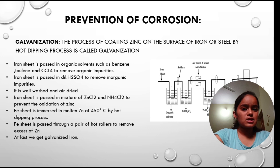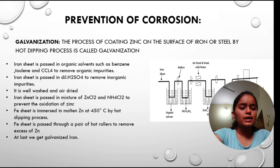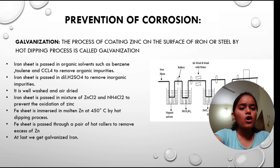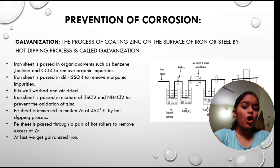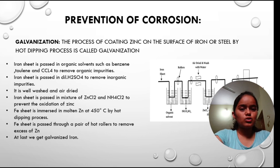The process of galvanization: first, the iron sheet is passed through organic solvents such as benzene, toluene and CCl4 to remove organic impurities. Then the iron sheet is passed through dilute H2SO4 to remove inorganic impurities. It is well washed and dried. The iron sheet is passed through a mixture of zinc chloride and ammonium chloride to prevent oxidation of zinc. The iron sheet is then immersed in molten zinc at 450 degrees Celsius by hot dipping process. Finally, the iron sheet is passed through a pair of hot rollers to remove excess zinc, and we get galvanized iron.